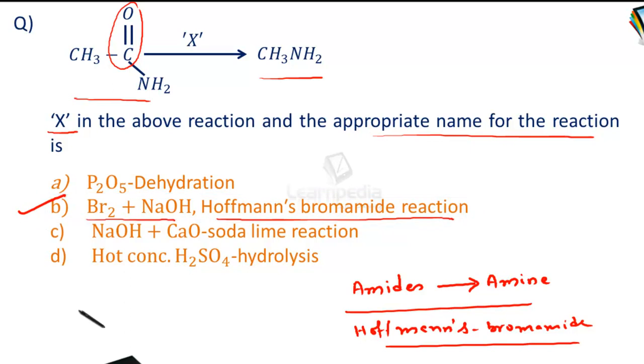What about option A? P2O5 dehydration. No doubt, P2O5 is used as a dehydrating agent. When we use P2O5 as the reagent, dehydration takes place. Water is eliminated from acetamide to give methyl cyanide, not methylamine.